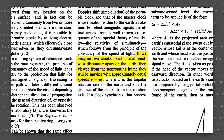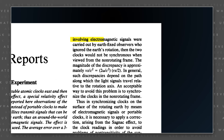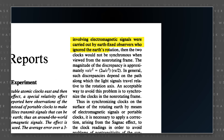'then viewed from the non-rotating frame, they will be moving with approximately equal speeds, V equals omega times R, where omega is the angular rotation rate of the Earth and R is the distance of the clocks from the rotation axis. If a clock synchronization process that involves electromagnetic signals were carried out by Earth-fixed observers who ignored the Earth's rotation, then the two clocks would not be synchronous when viewed from the non-rotating frame.'